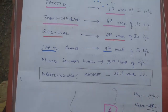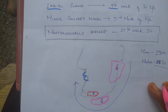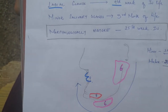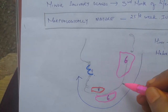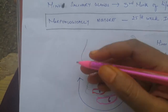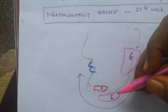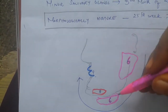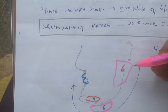To remember the intrauterine life timings, use the pattern 6, 6, 8, 9 — corresponding to parotid, submandibular, sublingual, and labial glands respectively.